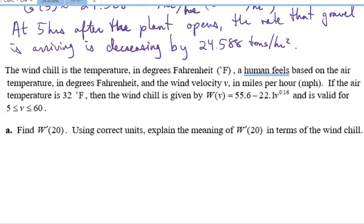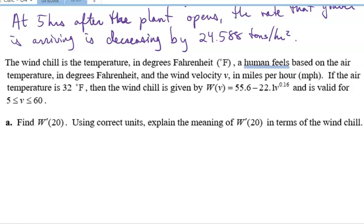And then for this last one here, we have wind chill and temperature, which is degrees Fahrenheit, that a human feel. Let me read that again. The wind chill is the temperature in degrees Fahrenheit that a human feels based on the air temperature, also in degrees Fahrenheit, and the wind velocity, which is V.